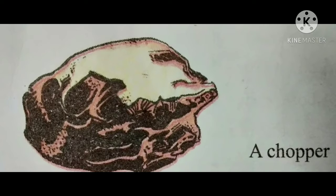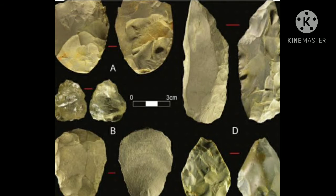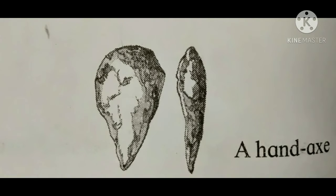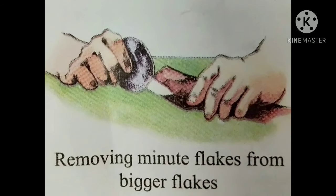Only one side of those tools had a sharp edge. Such tools are known as choppers. They could only be used for breaking nuts or bones. The tools made by Homo habilis were of this kind. They indicate that Homo habilis had not yet learnt to hunt.